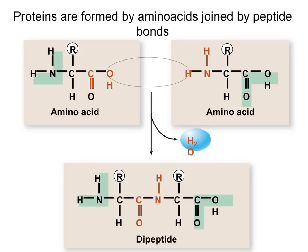And amino acids are linked together by what we call peptide bonds. So this is a bond between the acid group of one amino acid and the amino group of the next one that results in a dehydration reaction. So water is released, and now we have a dipeptide, which means a peptide made of two amino acids. So peptides is the name for a chain of amino acids, each amino acid linked together by peptide bonds.